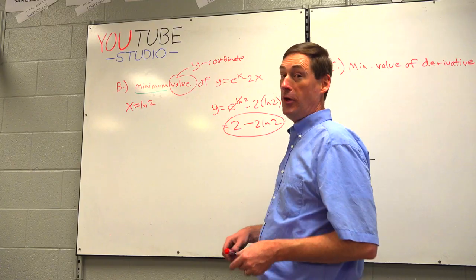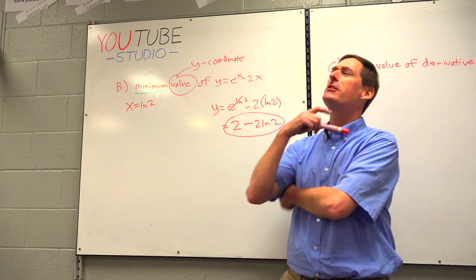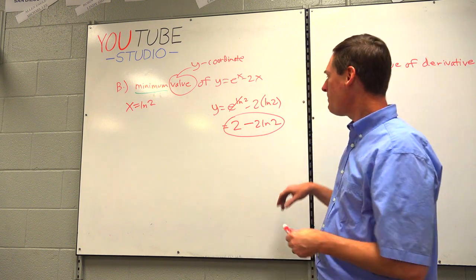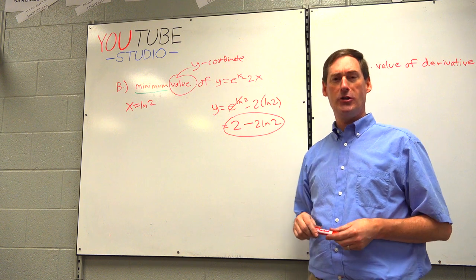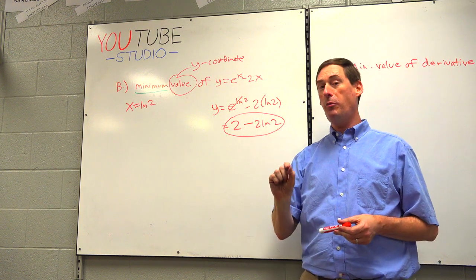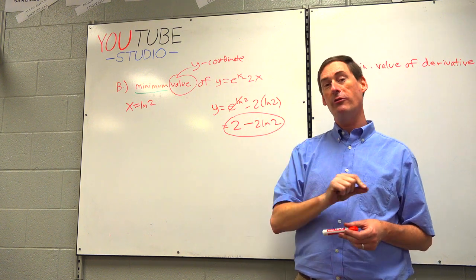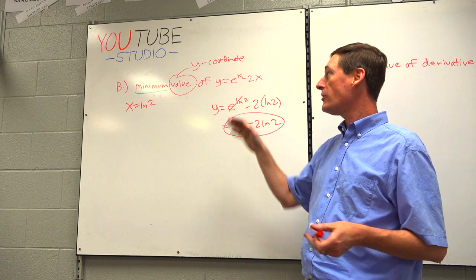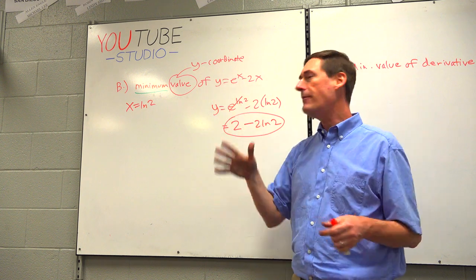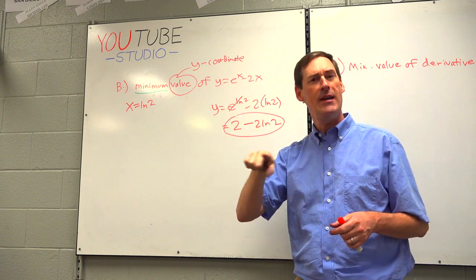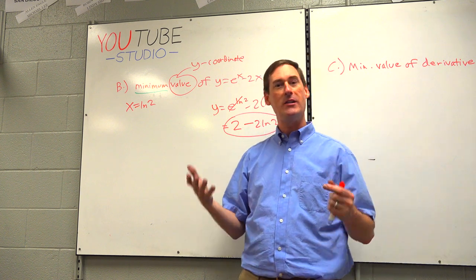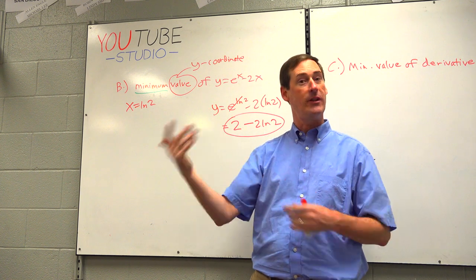2 minus 2 natural log 2 — I put it in a calculator, it's about 0.614. So the low point of that graph was about 0.6. It never does go below the x-axis, because its lowest y-coordinate is still positive. Interesting.